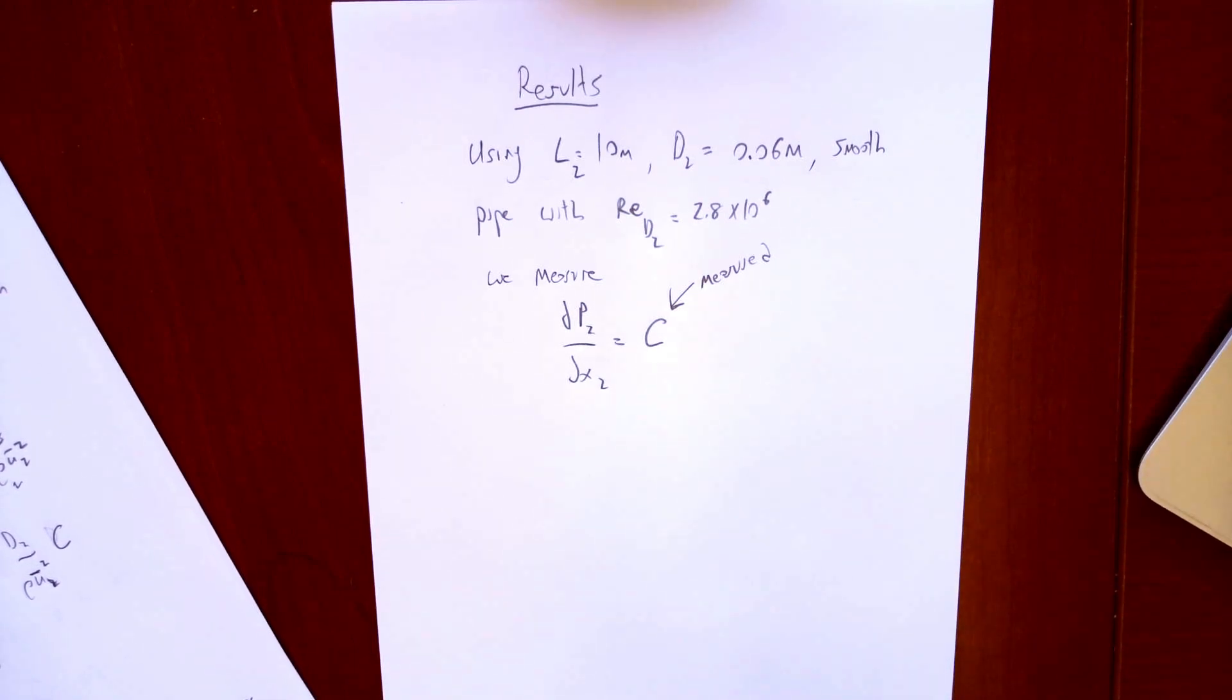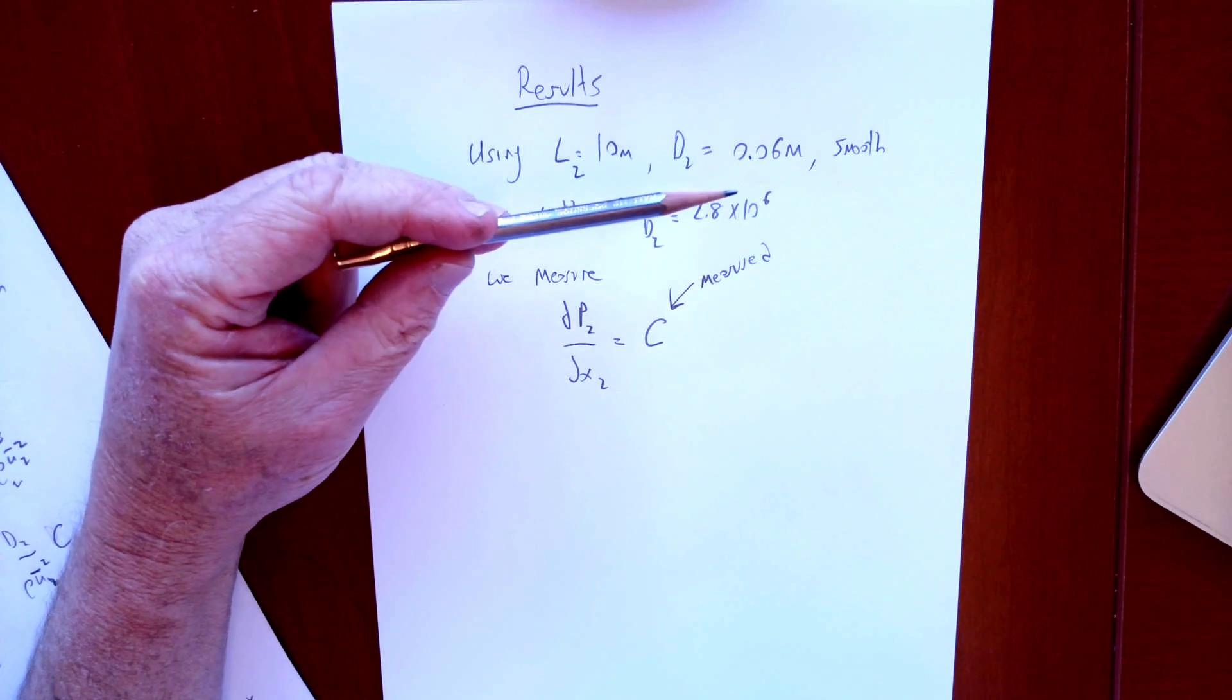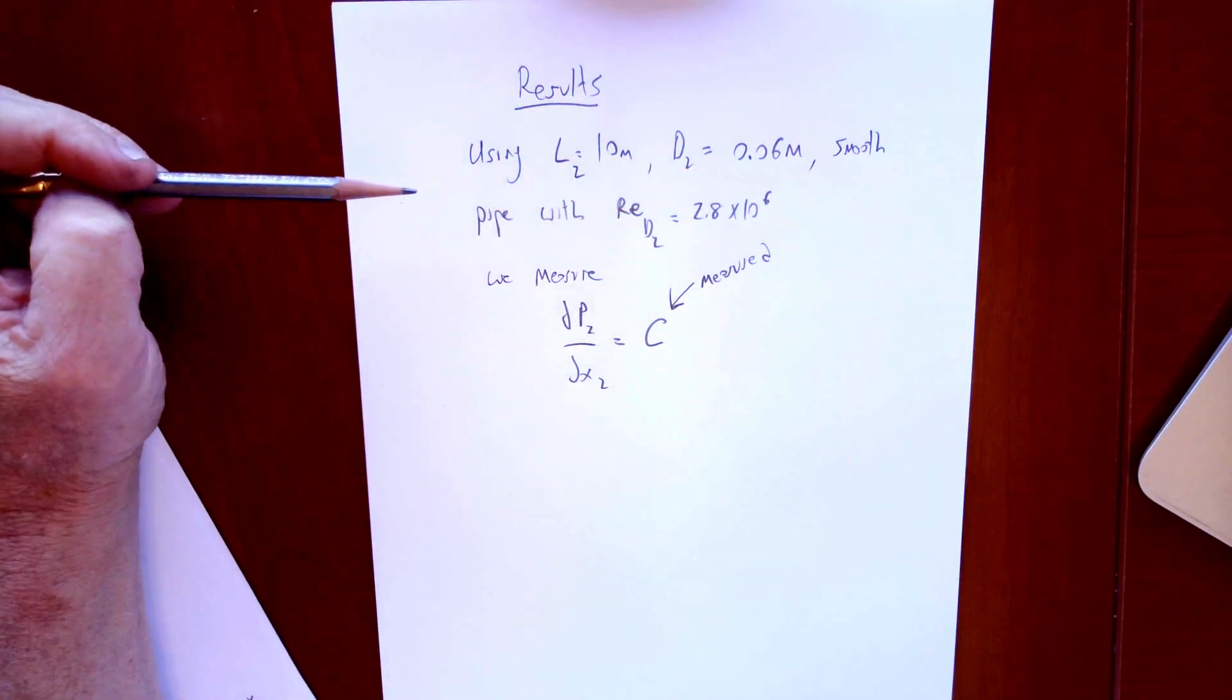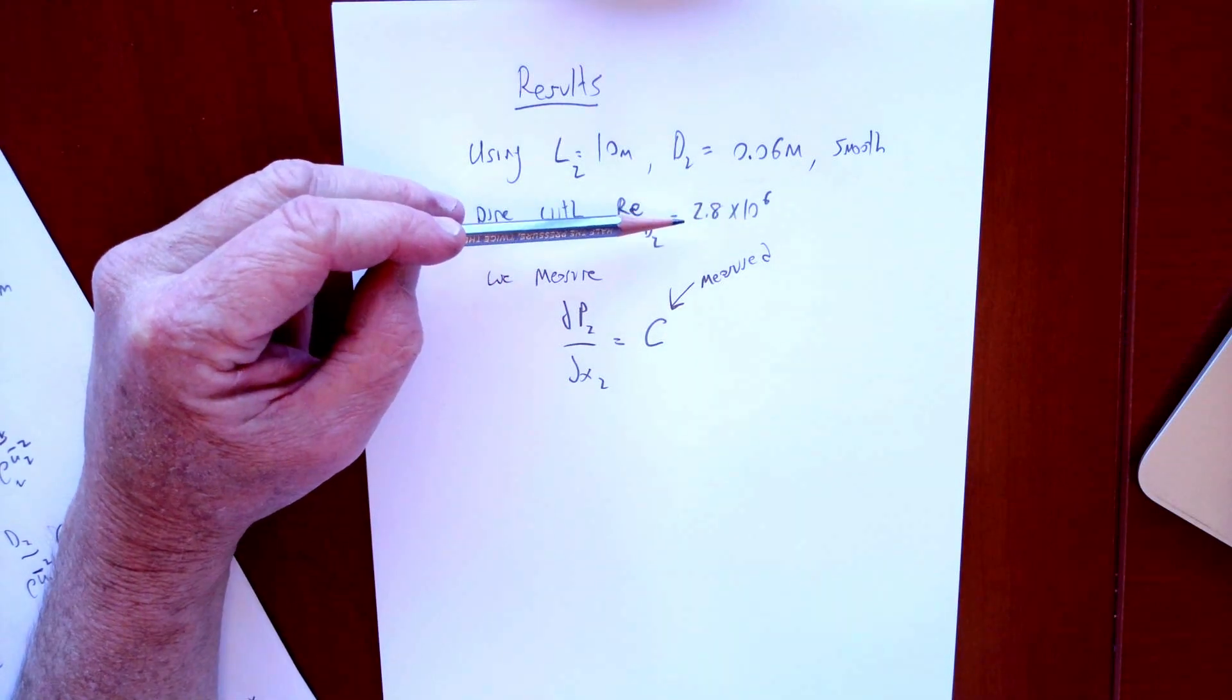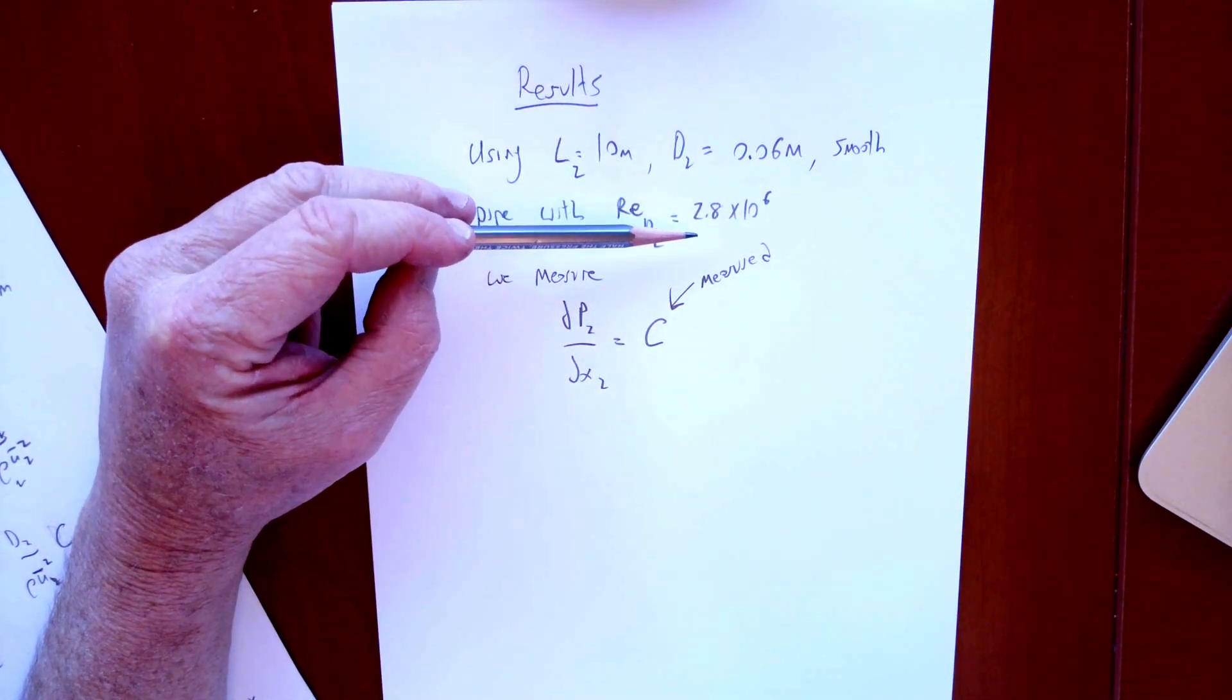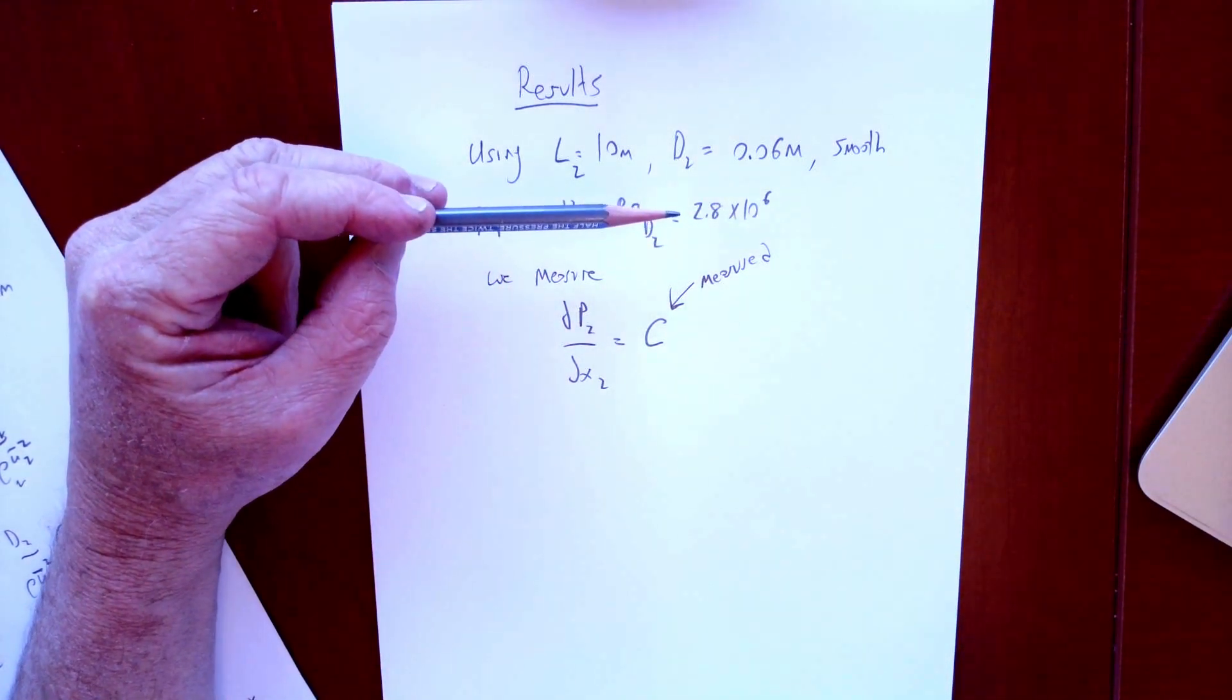So we go ahead and run our experiment. We have our 10 meter long pipe, it has a 6 centimeter diameter, it's smooth walled and we match the Reynolds number. We get that velocity up there, a nice high number, and we get that 2.8 times 10 to the 6 Reynolds number.